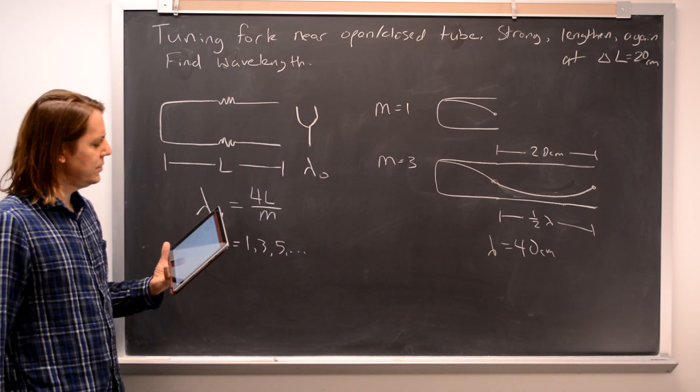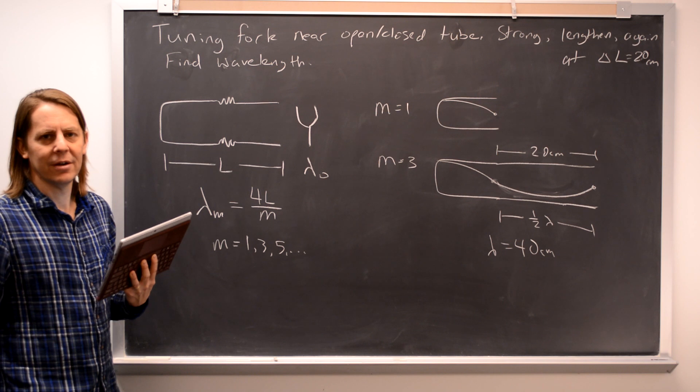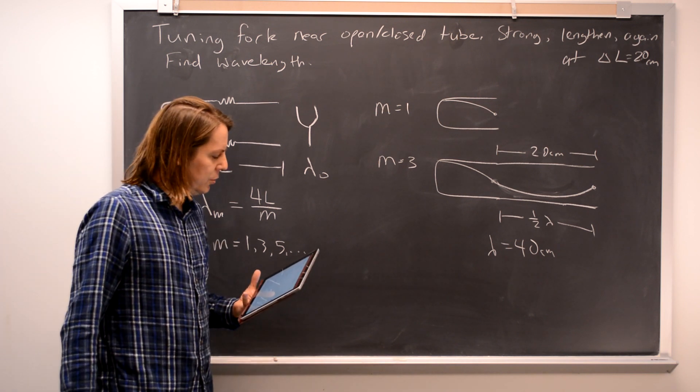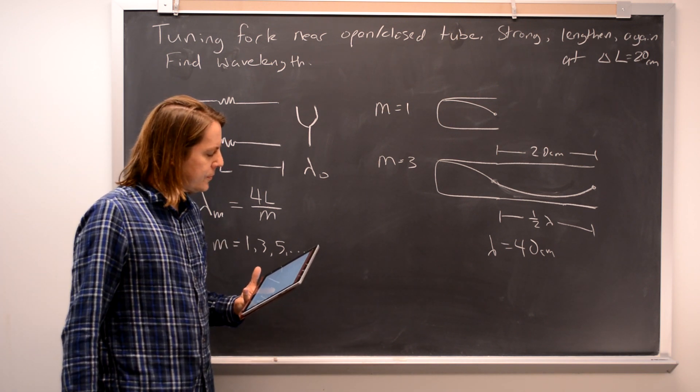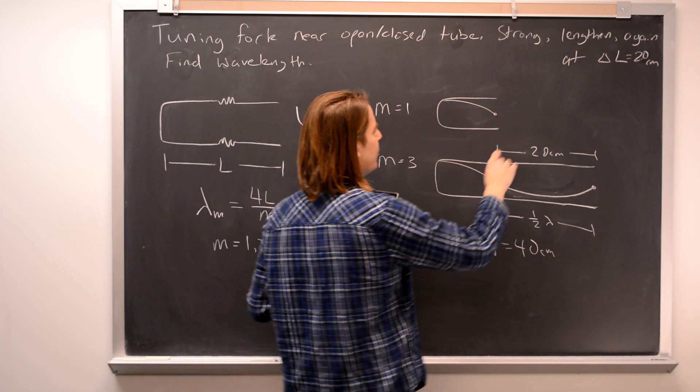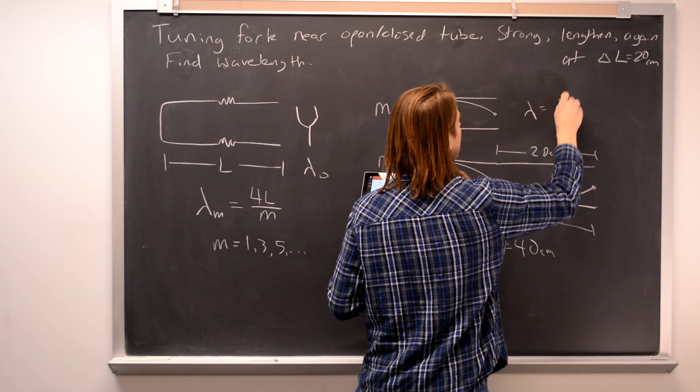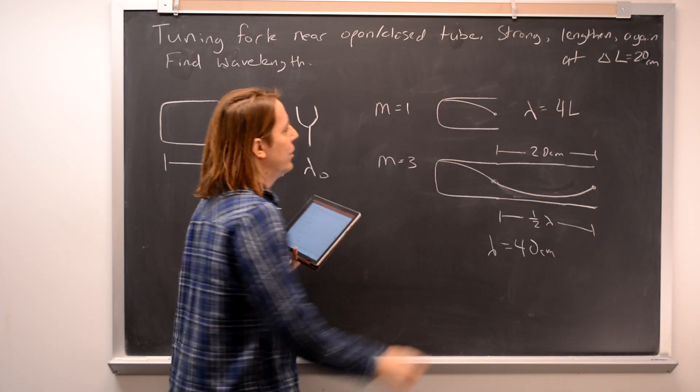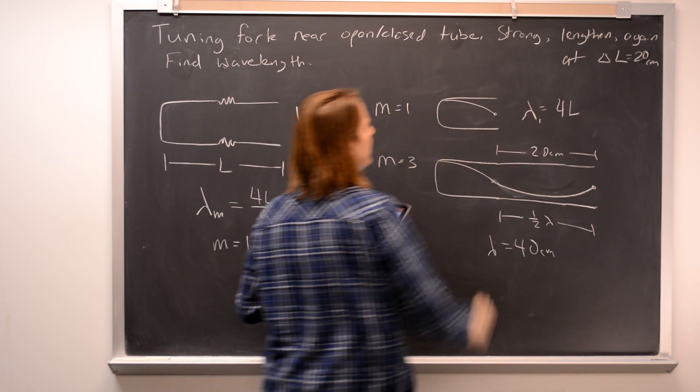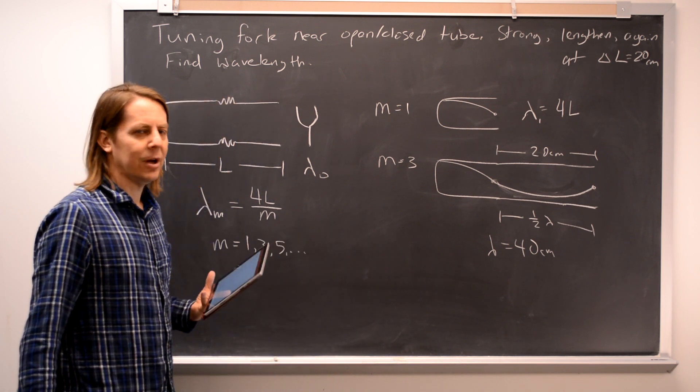Now, if you don't like to do these things visually like that, we can also do it with formulas. You can say, okay, let's go back to our formulas. We know that here, lambda is 4L. All right, this we'll call lambda 1, the first position that works. And then we have lambda 2.